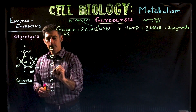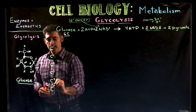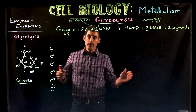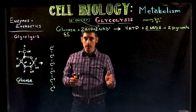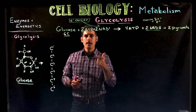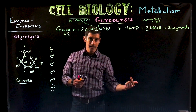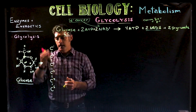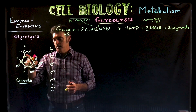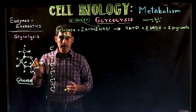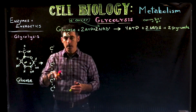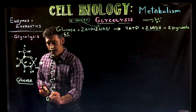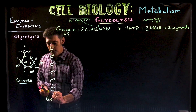We're going to number the carbons one through six. It's important to number them because the carbon numbers are part of the names of the molecules we'll encounter. Each carbon would have an oxygen and hydrogens, but we're not going through all of that right now. This numbered six-carbon skeleton is our representation of glucose.